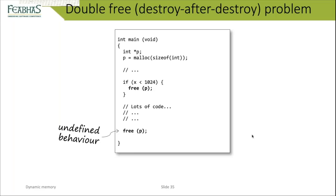Double free is another problem: calling free on the same pointer twice. On a hosted system like Linux, the standard C library typically catches this and reports a major error. On a deeply embedded system, a double free tells the memory management system to mark that memory as available for reallocation. If another pointer has since allocated that memory, the result is seriously corrupted state — potentially crashing the system in unpredictable ways.